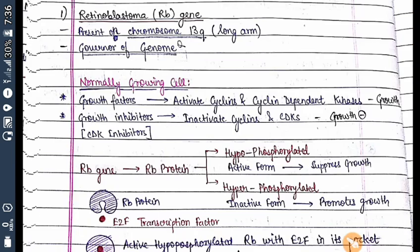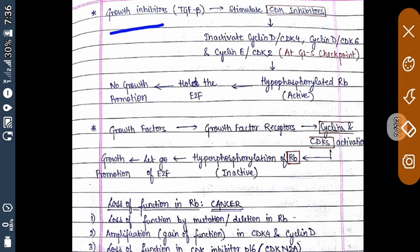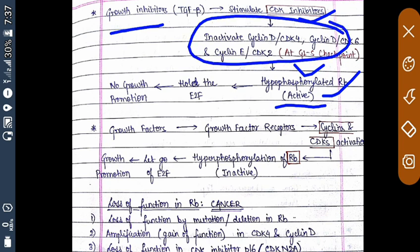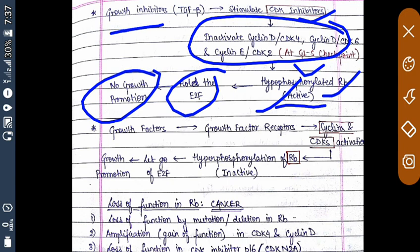Growth inhibitors such as TGF-beta stimulate CDK inhibitors, which inactivate cyclin D–CDK4, cyclin D–CDK6, and cyclin E–CDK2 at the G1/S checkpoint. This leads to hypophosphorylated retinoblastoma protein. Active RB then holds E2F, and there is no growth. This is the normal process by which growth inhibitors prevent growth promotion through CDK inhibitors activating RB.